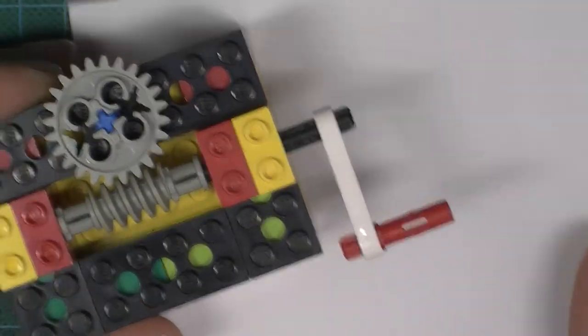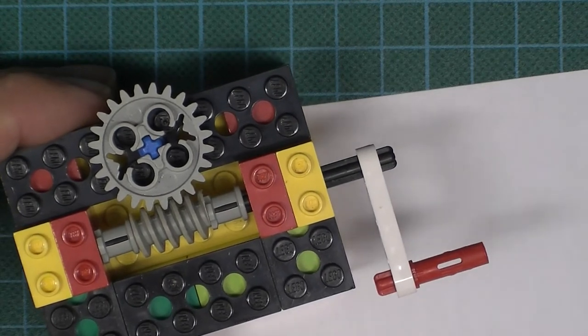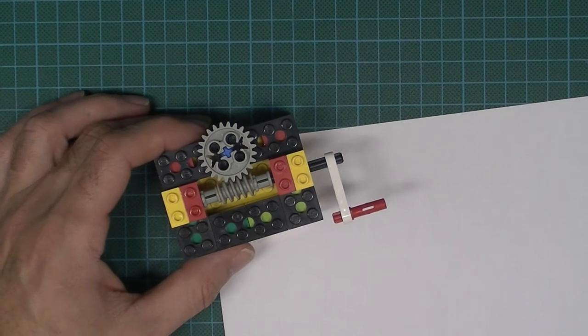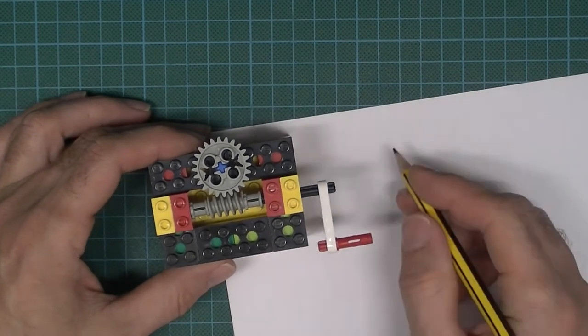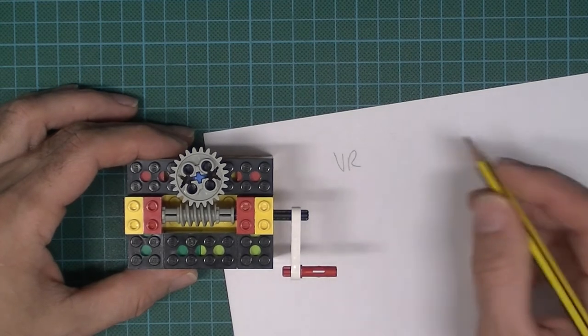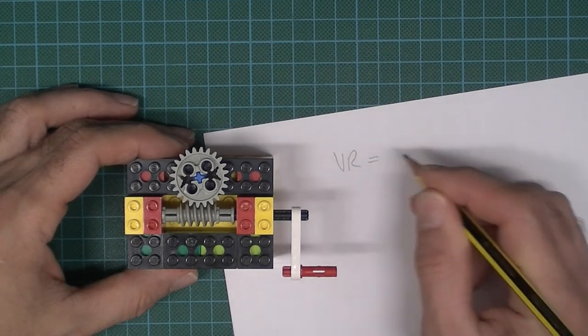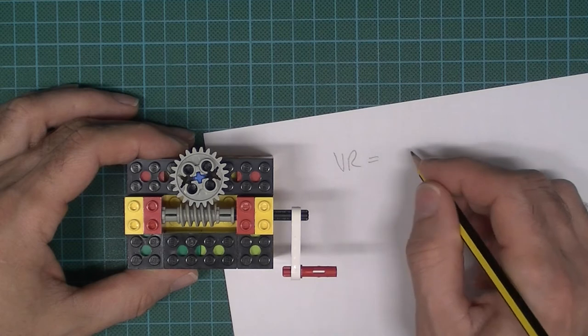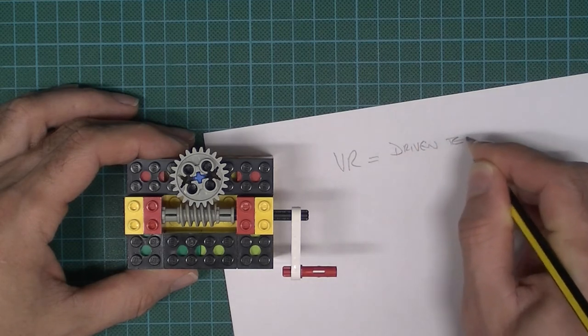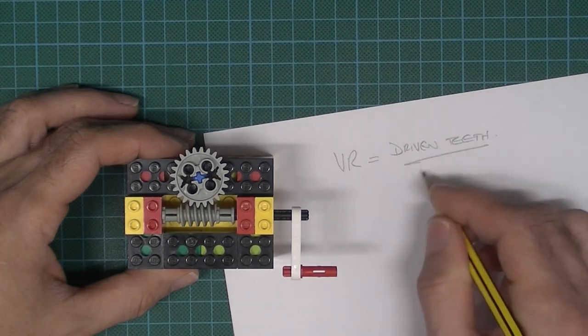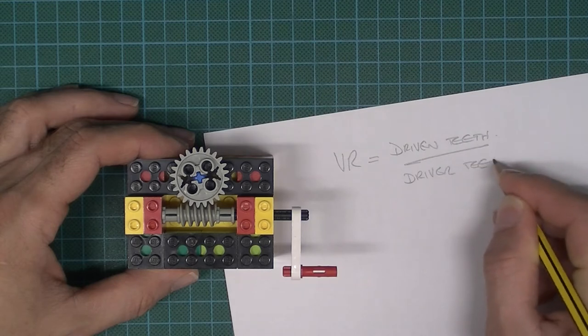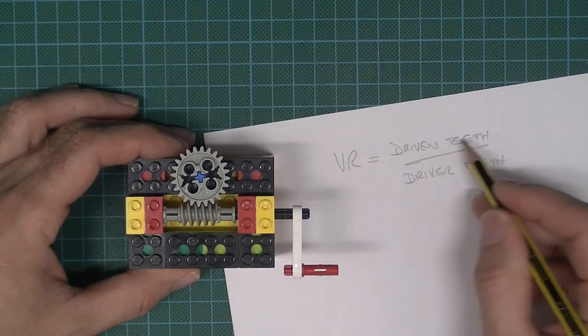Let's do some calculations. If you wanted to calculate, for example, the velocity ratio of this gear system, so VR equals velocity ratio, what we would do is we would divide the driven teeth over the driver teeth. I'm going to define this in just a moment.